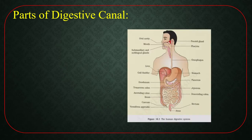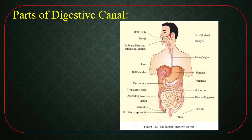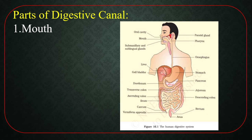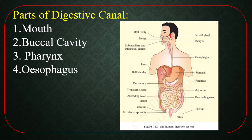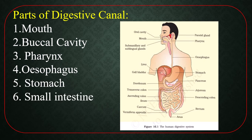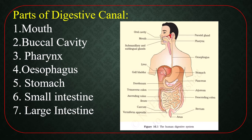Parts of digestive canal. There is a figure of the digestive system of the human body. Number one, mouth; number two, buccal cavity; number three, pharynx; number four, esophagus; number five, stomach; number six, small intestine; number seven, large intestine; and finally, anus.